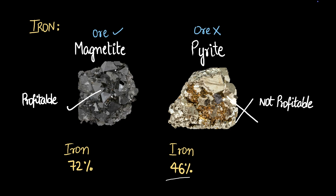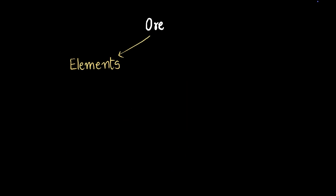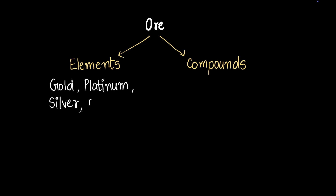Now you're clear on what minerals and ores are. There are two different types of ores: ores where we have elements, and ores where we have compounds. Examples of element-type ores include gold, platinum, silver, and copper — all of these exist in their pure form in nature, not in some compound.